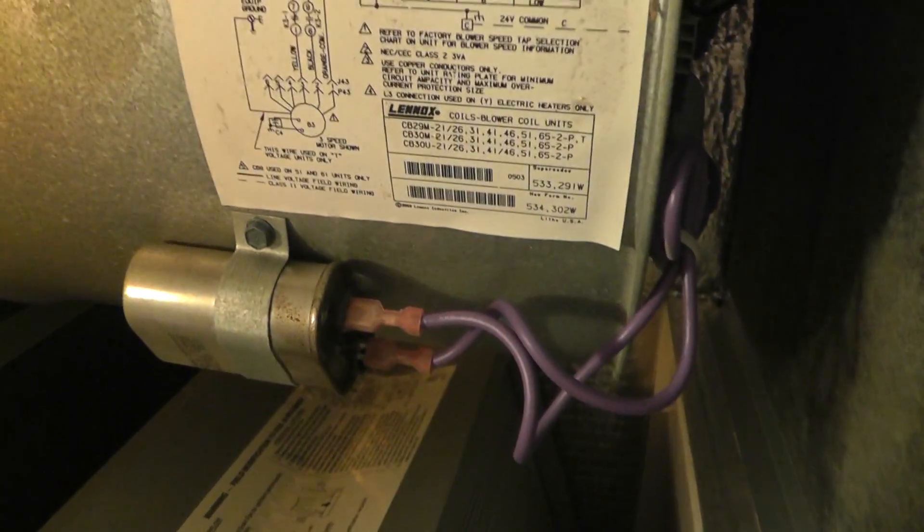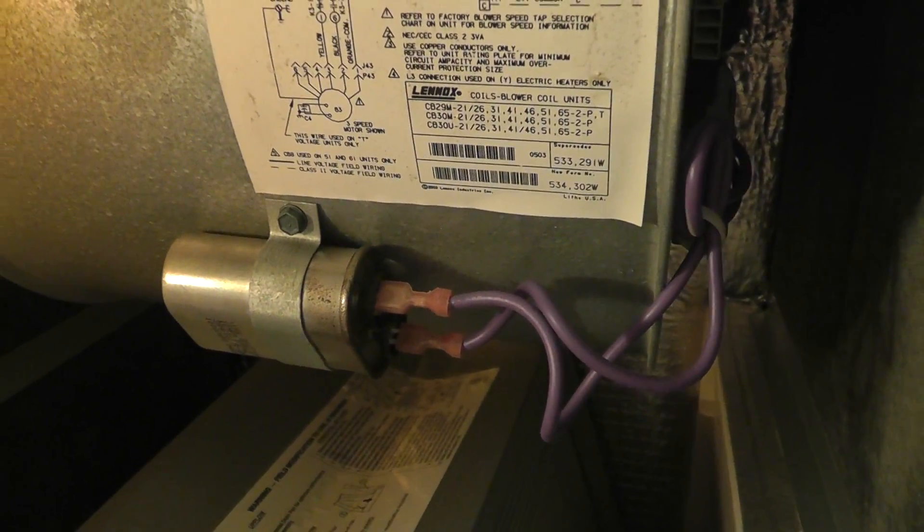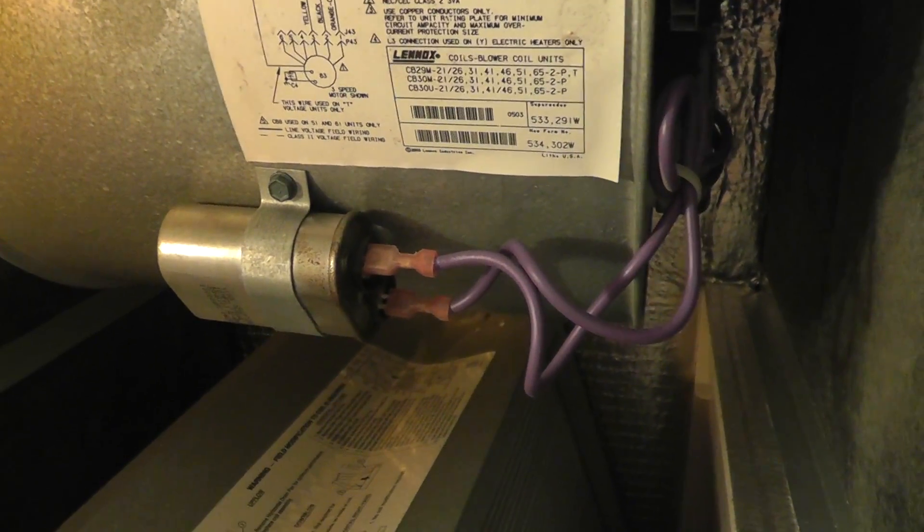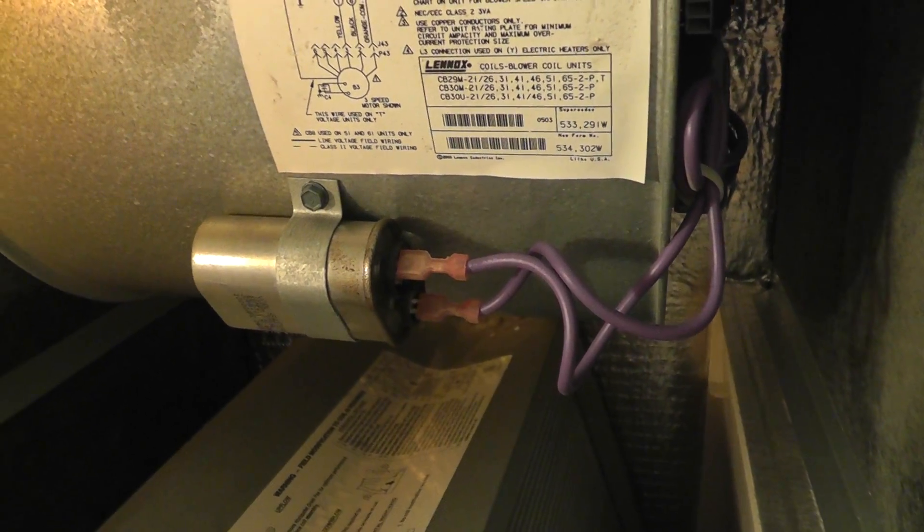and then we want to discharge this run capacitor by touching those two terminals together to discharge the run capacitor. We take the leads off. We can measure it with our multimeter on MFD, or you might just look at it and see its bulge or some jelly or goop coming out of it, and you know the run cap's bad.